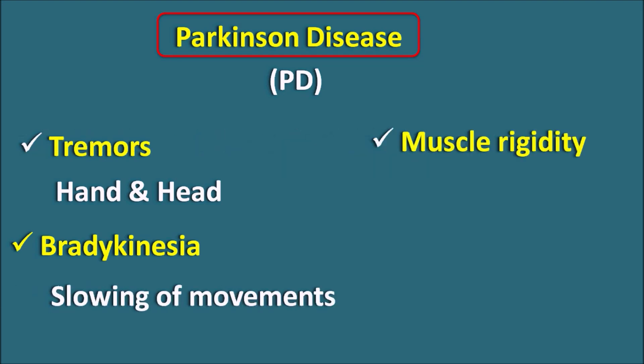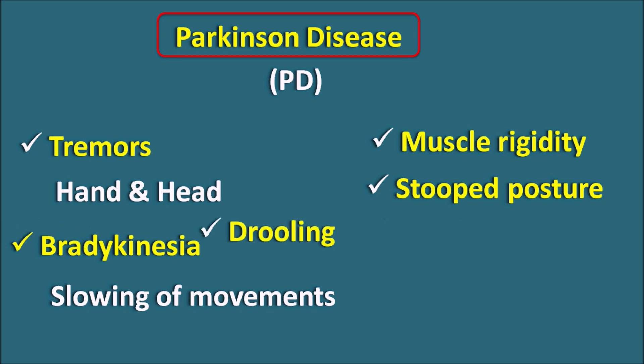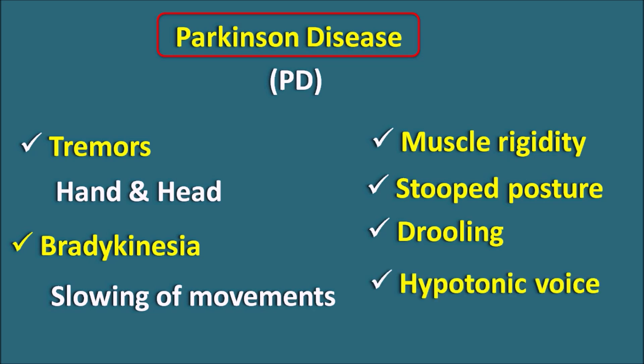Another important symptom is muscle rigidity. Parkinson's patients cannot have smooth muscle movements, so motor rigidity is observed, which results in jerky movements along with some involuntary movements. This muscle rigidity, along with bradykinesia, can produce various other symptoms like stooped posture — where the posture is bent forward — and drooling, where excessive secretion of saliva can be observed. Additionally, a hypotonic voice, slow speech and slurred speech can be observed. All these are because of motor dysfunctions.